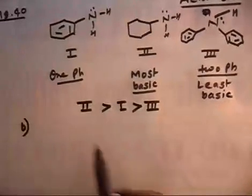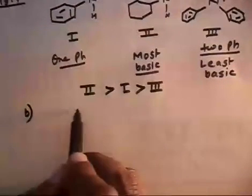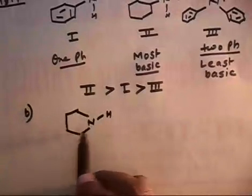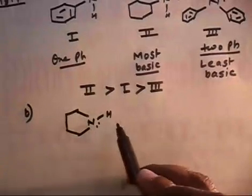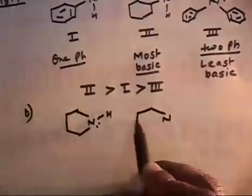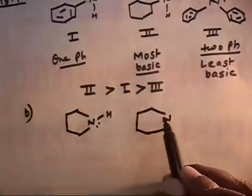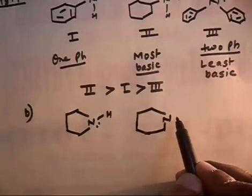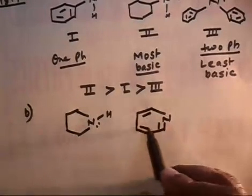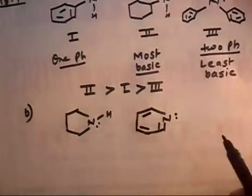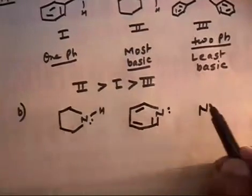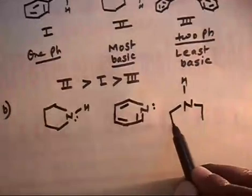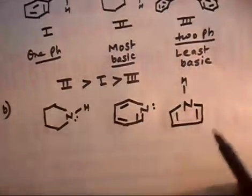Now let us do the next problem, problem B. This type of acid-base question is important and often asked. We have three compounds. The first has a lone pair on nitrogen in a ring with a double bond — this is aromatic, so the lone pair is in an sp2 orbital. The second is also a ring compound with a lone pair. The third compound has an N-H group.